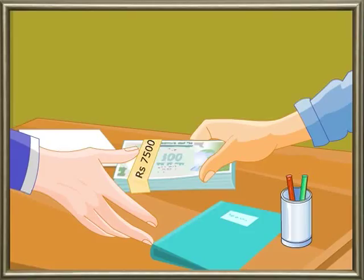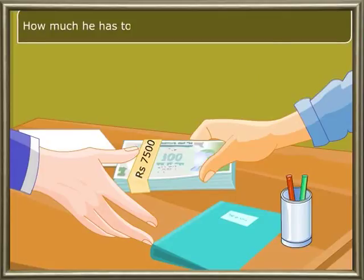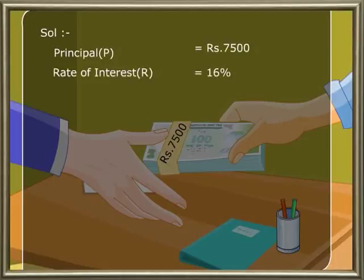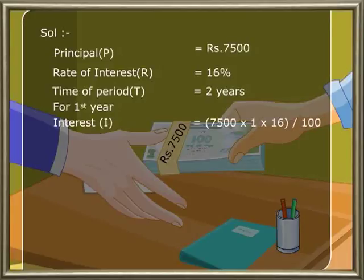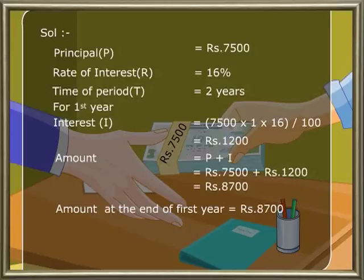We can also solve this problem using the formula: the amount A is equal to P into 1 plus R by 100 whole to the power N. Substituting the numbers: 7500 into 1 plus 16 by 100 whole to the power 2, because there are two years. So 7500 into 1 plus 4 by 25 whole square, which is equal to 7500 into 29 by 25 whole square. Simplifying: 7500 into 29 by 25 into 29 by 25, which is equal to 12 into 29 into 29.